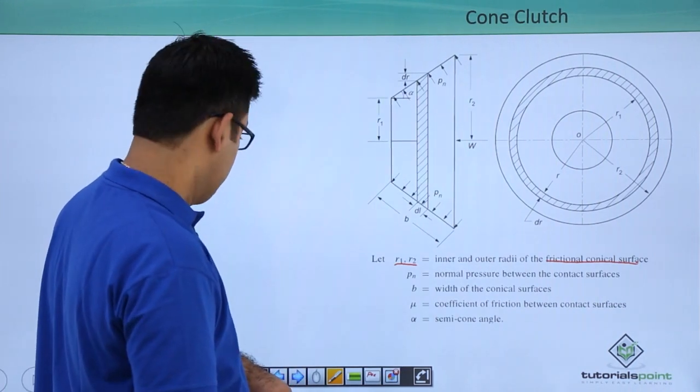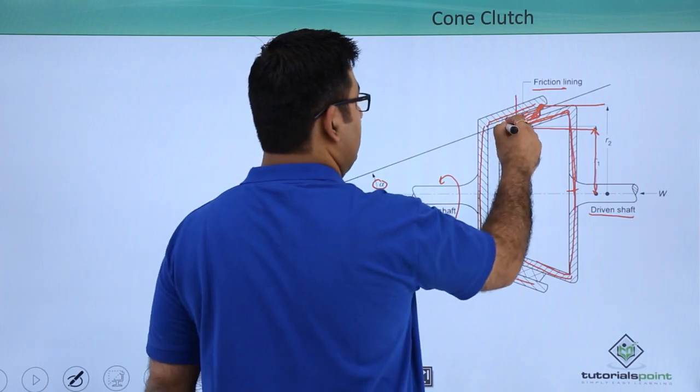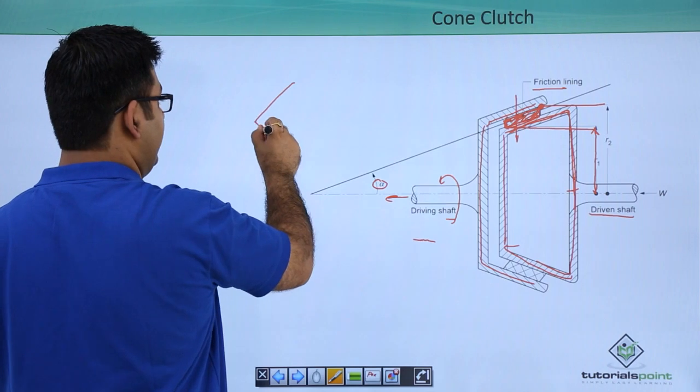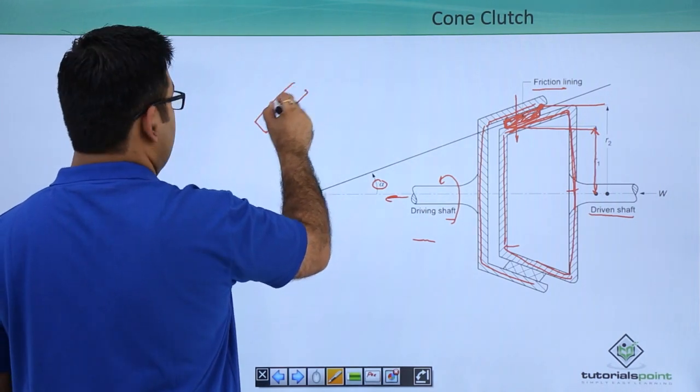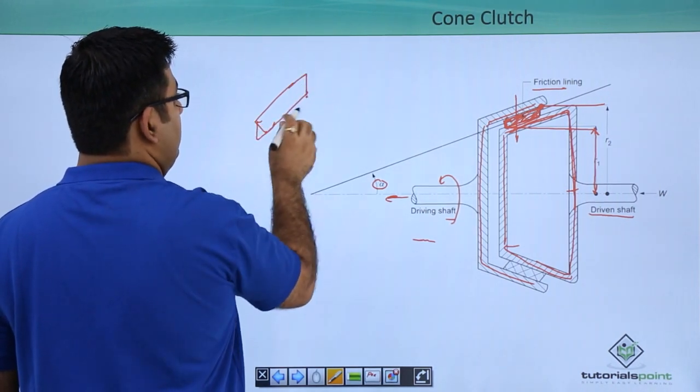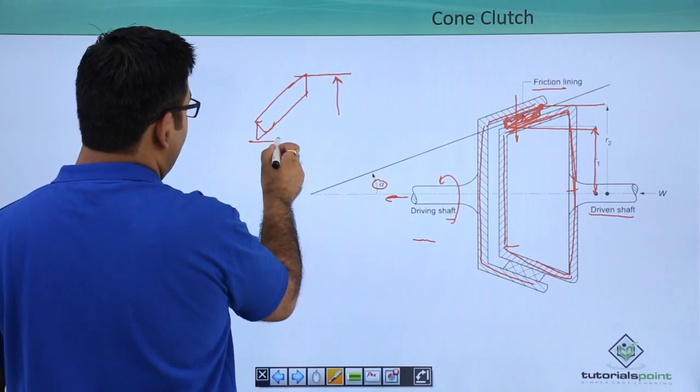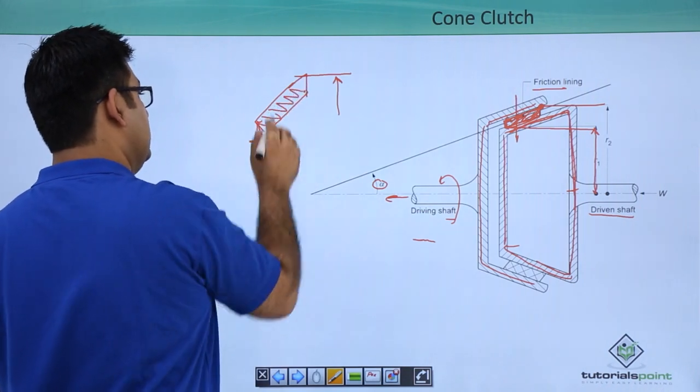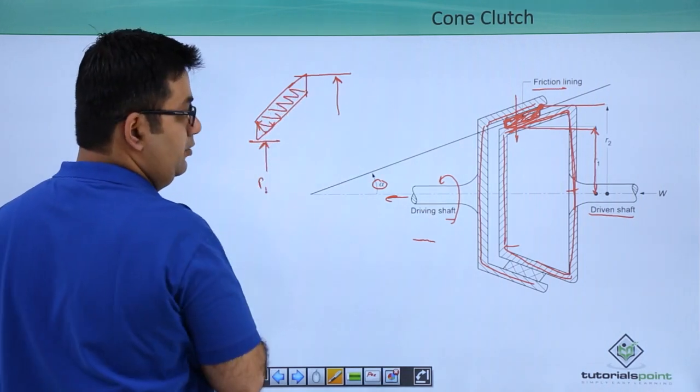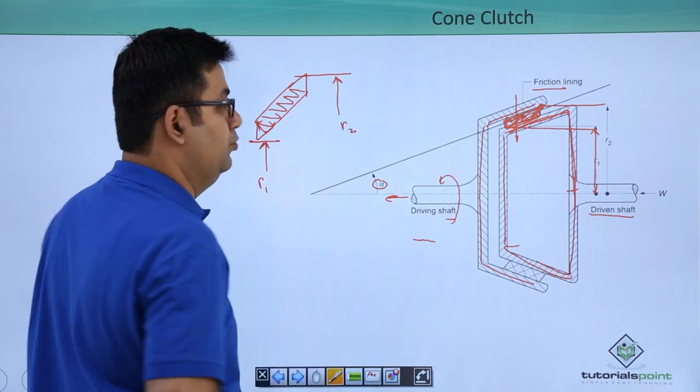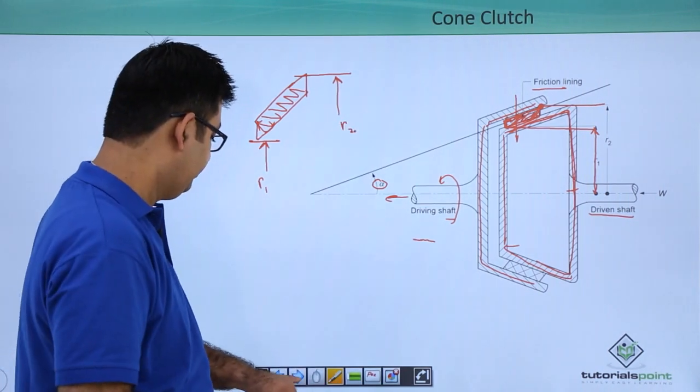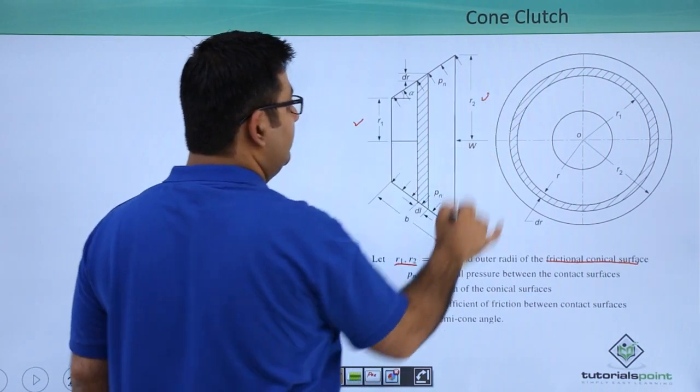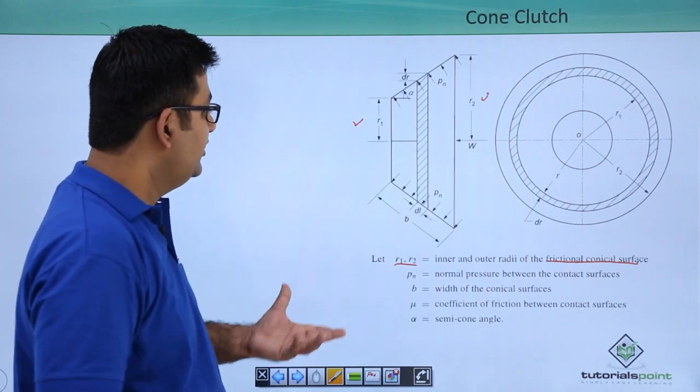This goes for the outer radius and this goes for the inner radius surface. This is r1 and then r2. This is depicted here as well - r1 and r2. What we have done is we have taken a small elementary length over here which is dl.